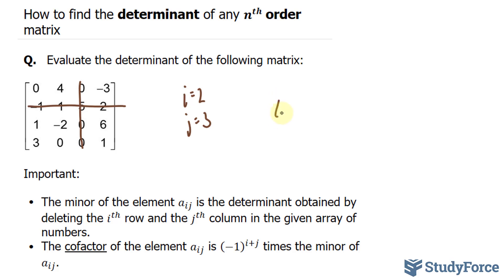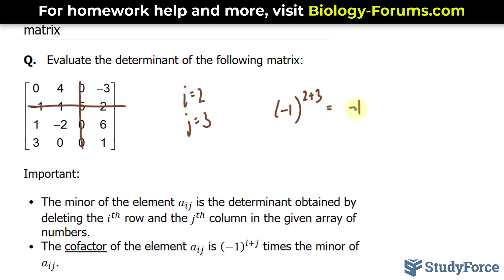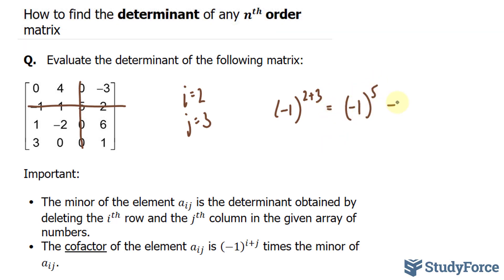To find your cofactor, we'll take negative 1 and raise it to the power of 2 plus 3. This gives us negative 1 raised to the power of 5, and that's equal to negative 1. What's more, we will now take this number 5 and multiply it by negative 1. Whatever that number is, where the row and the column intersect, you'll multiply by negative 1 in our case. Now that we found our cofactor of negative 5,